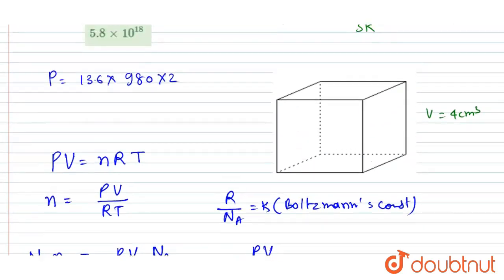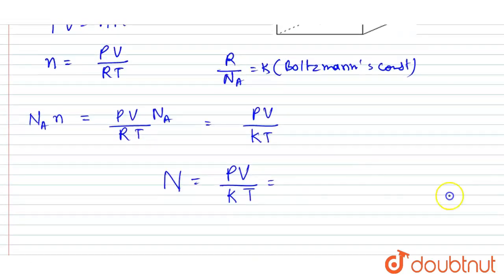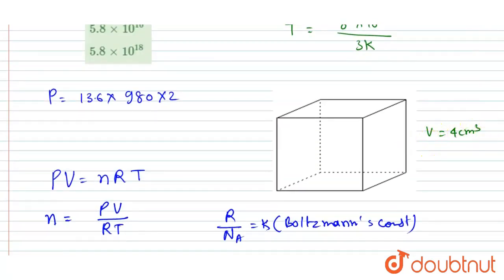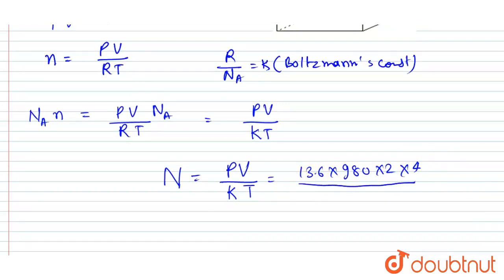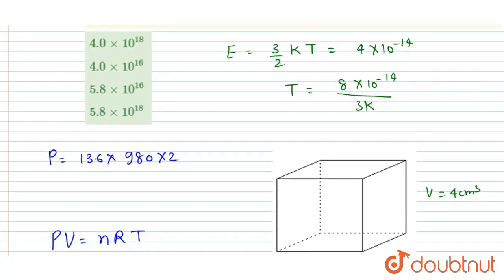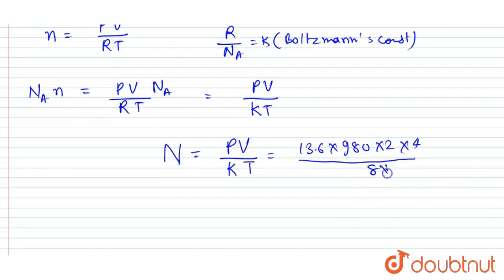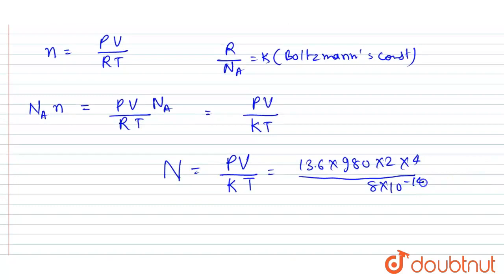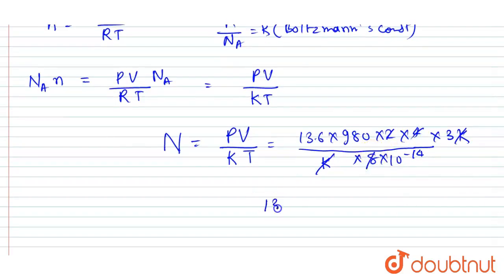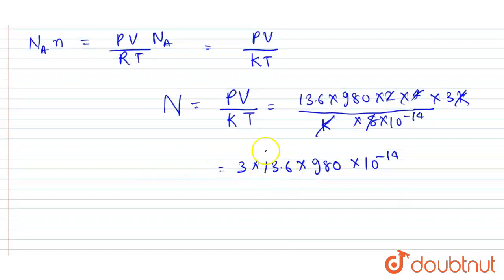Now substituting the values: pressure is 13.6 × 980 × 2, volume is 4, and temperature is 8×10⁻¹⁴ divided by 3k. Substituting into PV/kT, the k cancels out. Computing 13.6 × 980 gives approximately 13328, multiplied by 2 gives approximately 39984, and multiplied by 4 gives the numerator. The 10⁻¹⁴ in the denominator becomes 10⁺¹⁴ in the result.